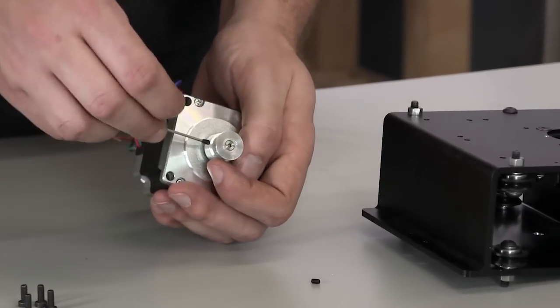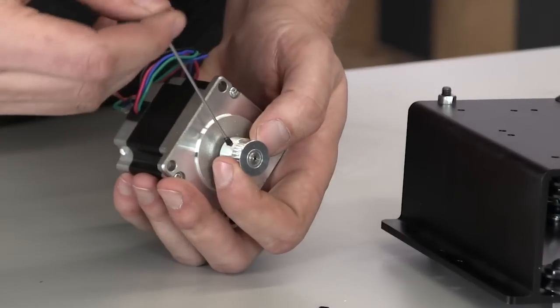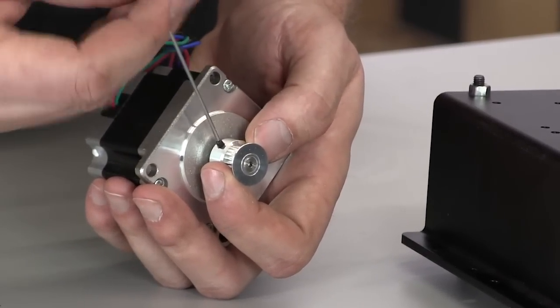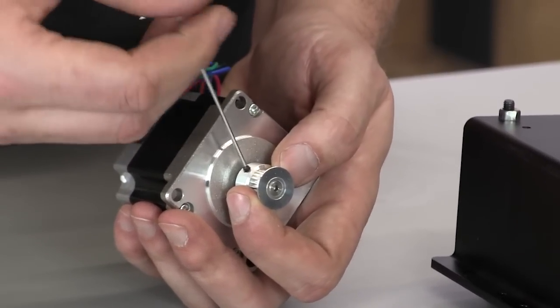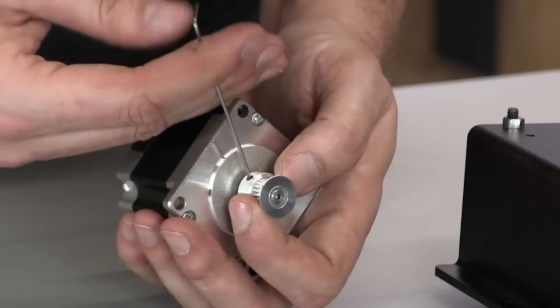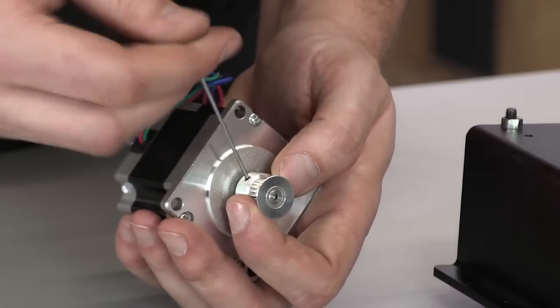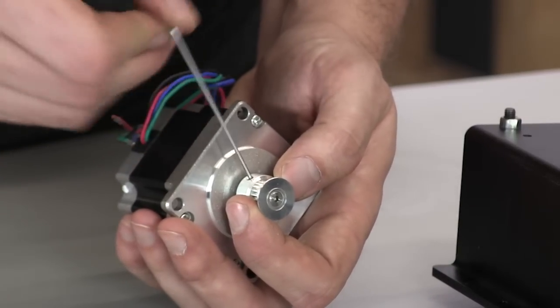These are small delicate screws, so make sure that you don't cross thread them. There's no reason to get them very tight at this moment. We'll adjust the placement of the pulley on the motor later.